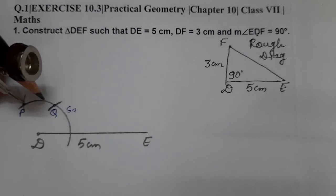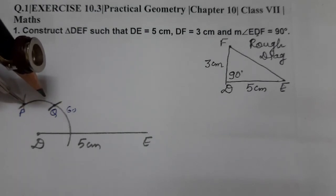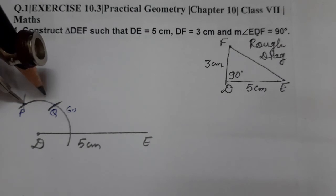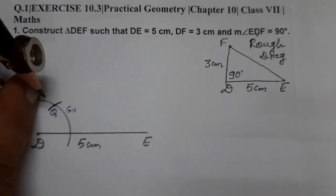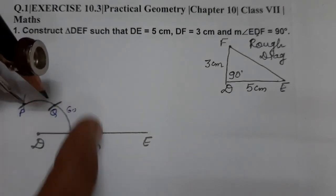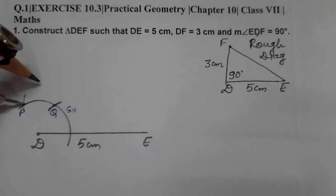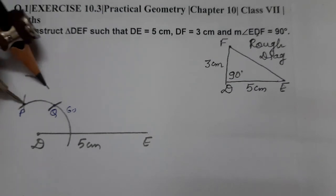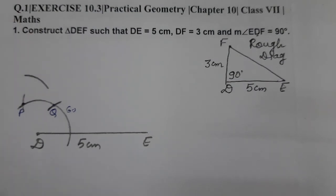Always take more than half. Whenever you want to bisect anything, whether it's an angle, a side, or a line segment, always take more than half. We don't need to measure exactly; just by estimate we take it.